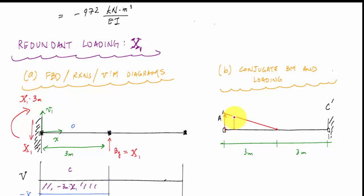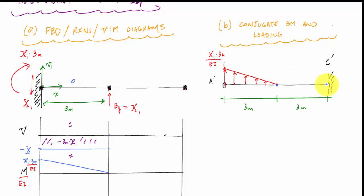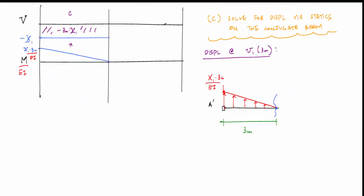The conjugate loading is linear, and the peak value is X₁ times three meters over EI. Now I just need basic statics to find the internal loading at three meters and six meters from the left in the conjugate beam. I make a cut at three meters and draw the free body diagram of the left side, identifying point B-prime. The internal moment in the conjugate beam at this cut corresponds to the displacement of the real beam, so I need to solve for M_B-prime by summing moments about the cut.